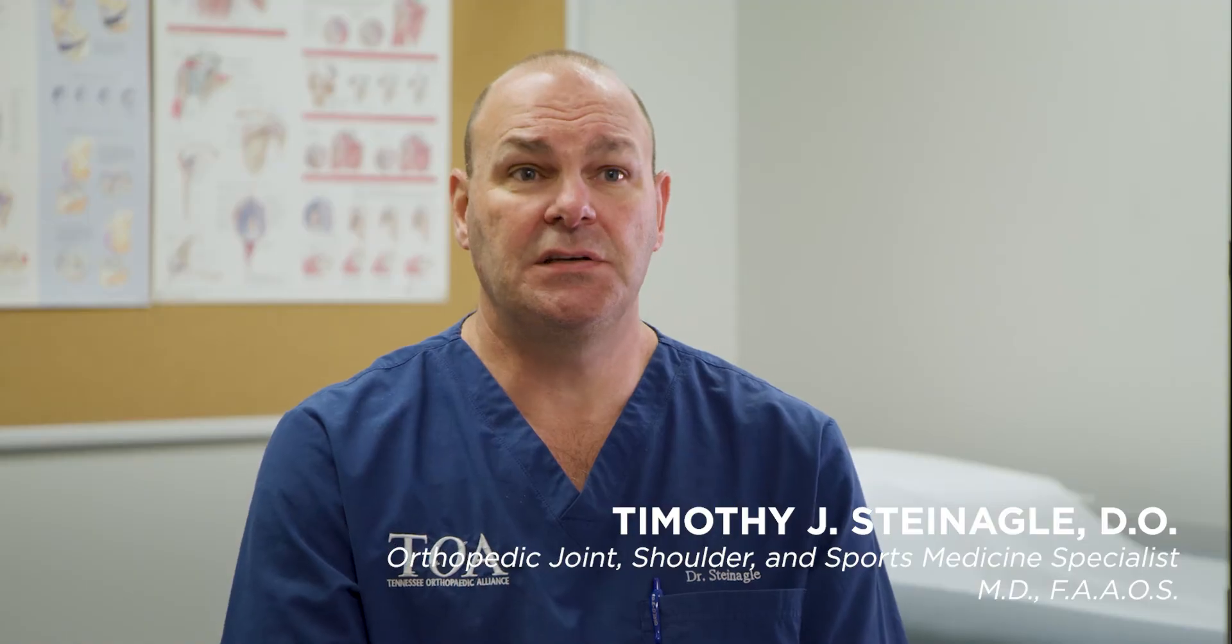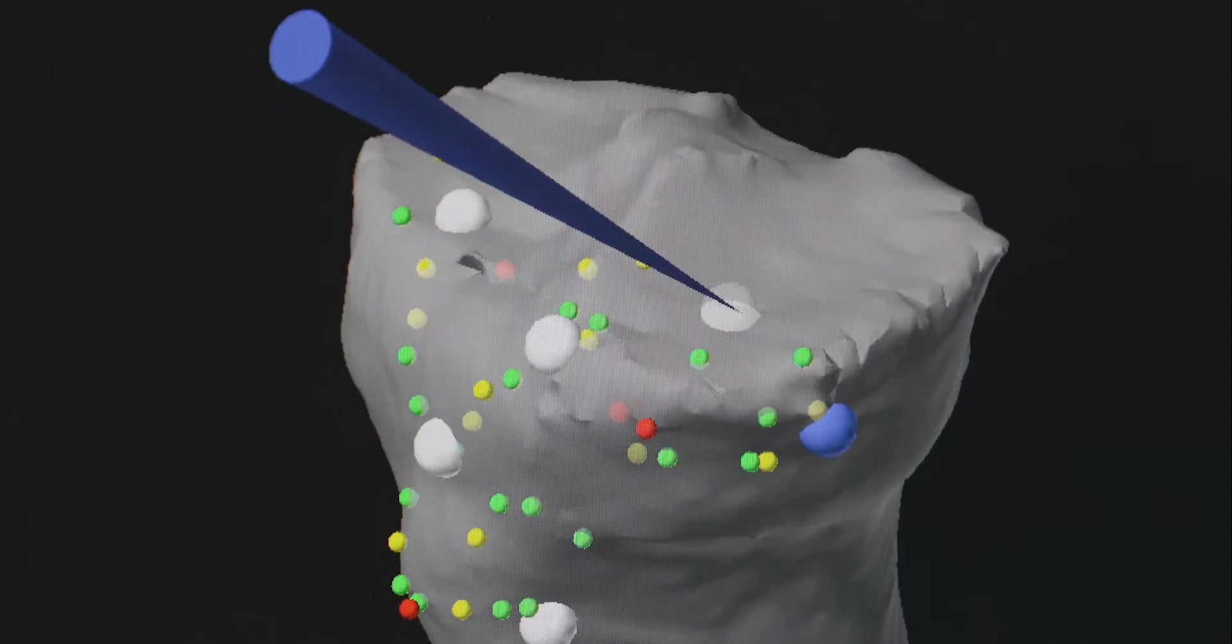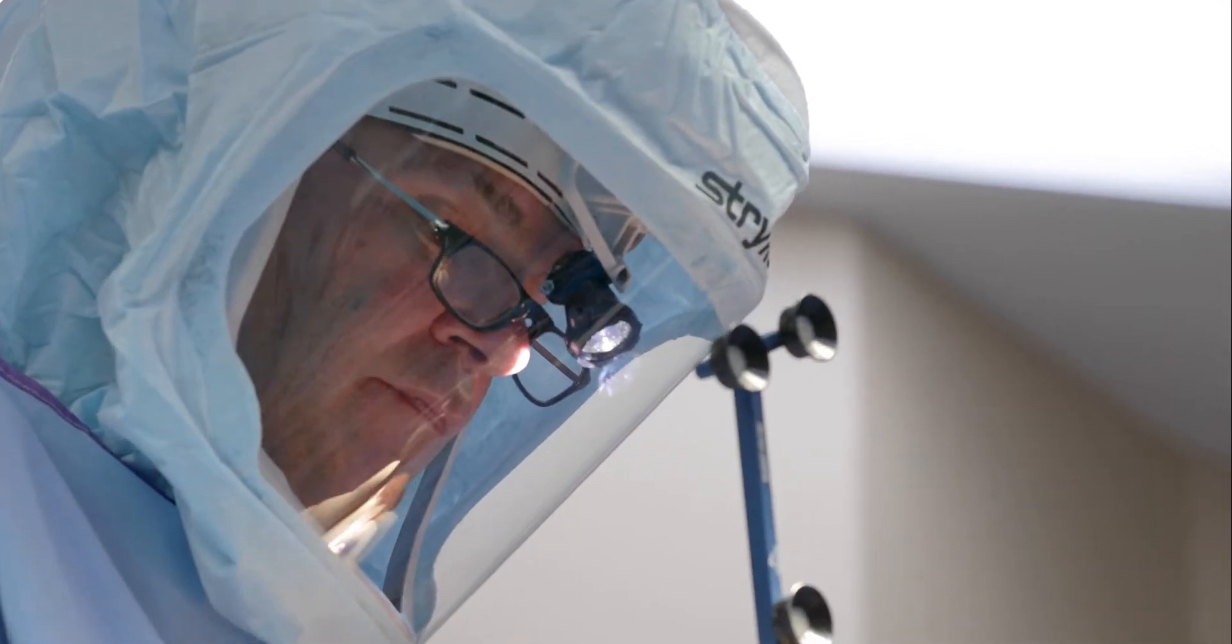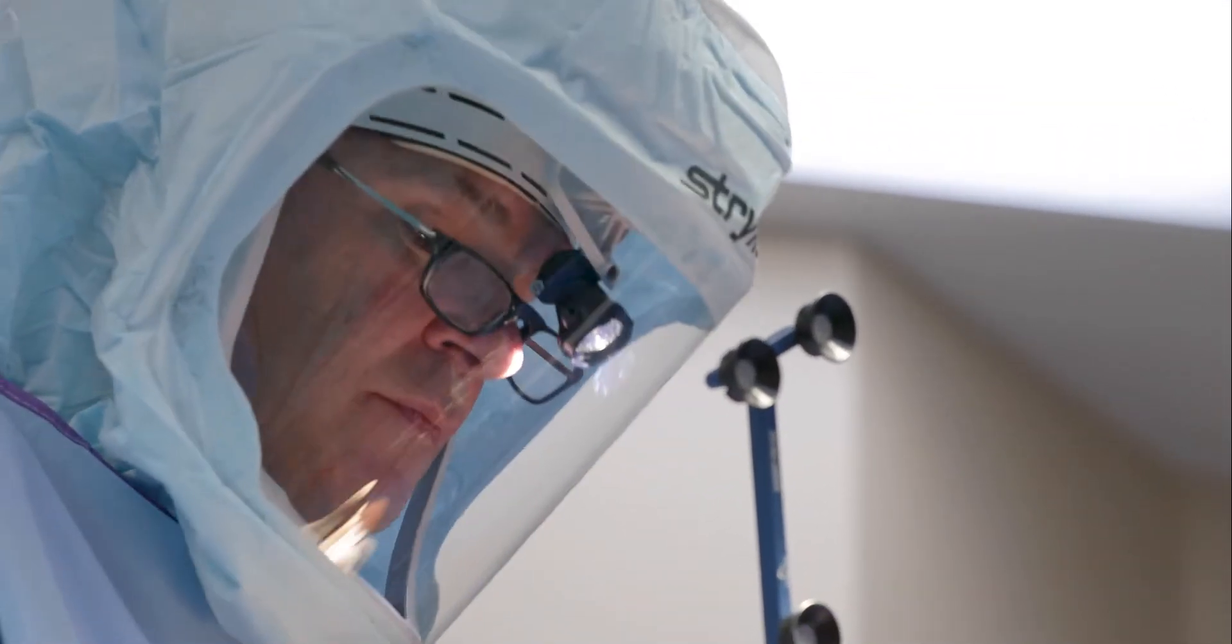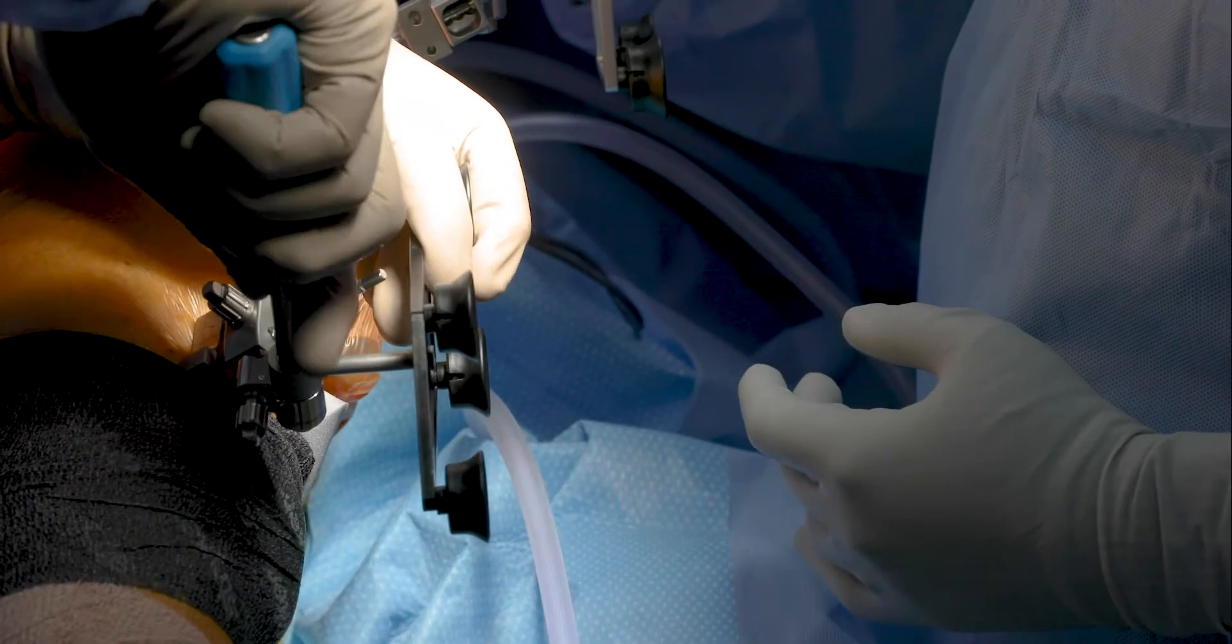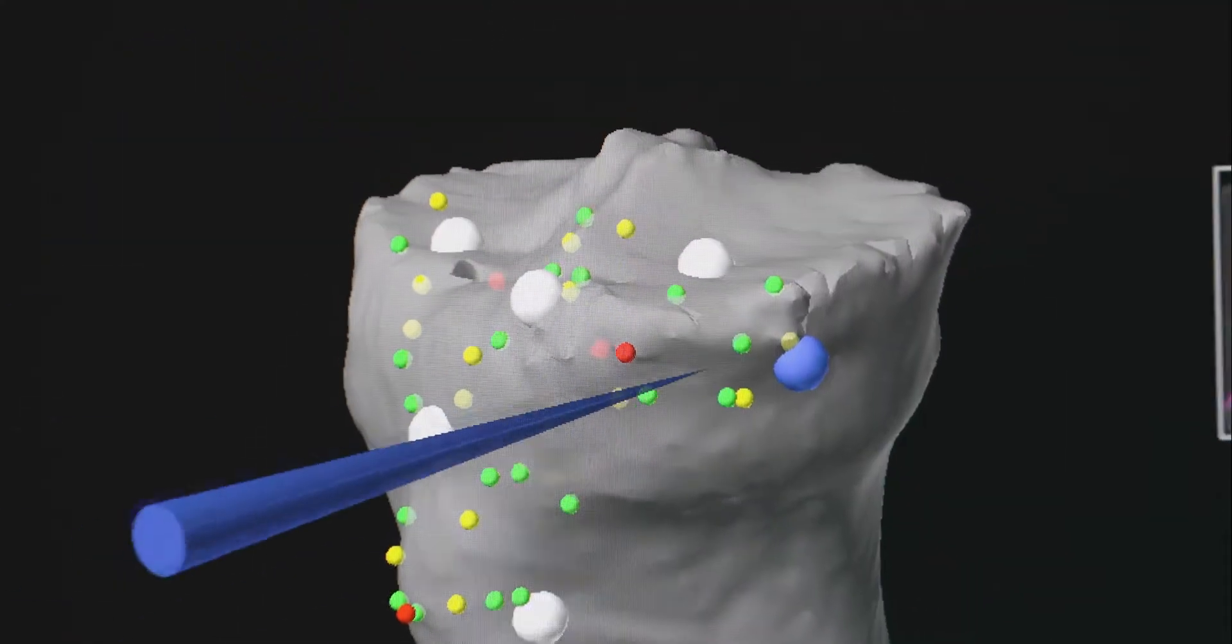We obtain a CT scan of the patient's knee. From that CT scan, we can build a 3D virtual model that captures all the unique anatomy of their knee. It allows you to have what's called an array, a system that sends information back to the robotic arm.